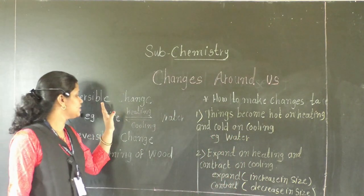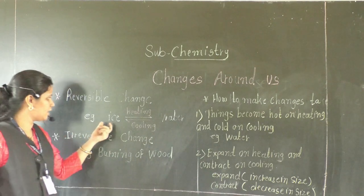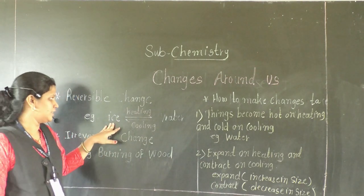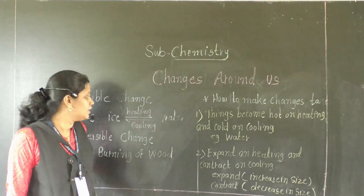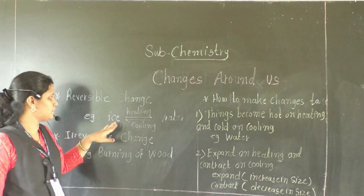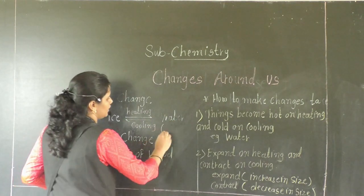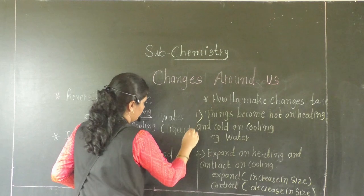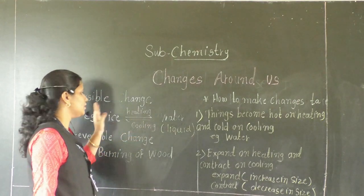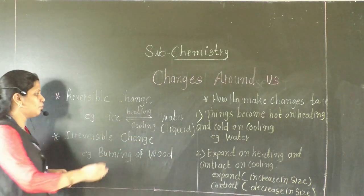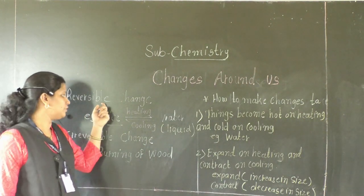Reversible change means the original substance will get back. For example, ice — when we heat ice, it changes into water. The state changes totally: ice is solid, and it changes into water, which is a liquid state. But again, after cooling, this water converts back into ice — the original substance. So this is our example of reversible change.